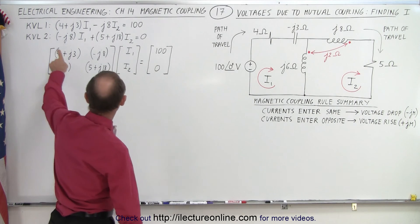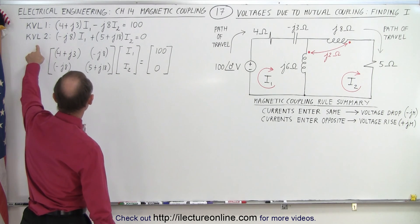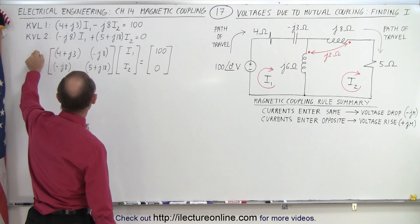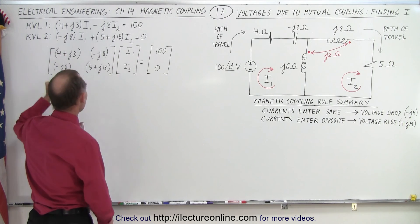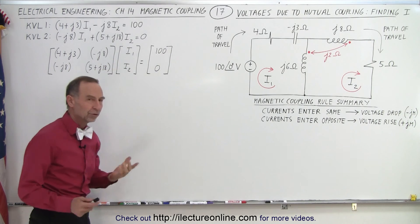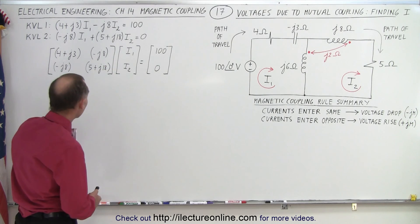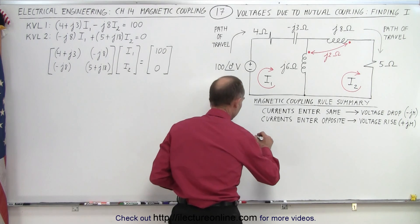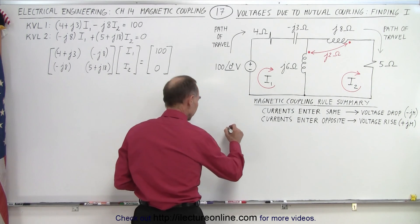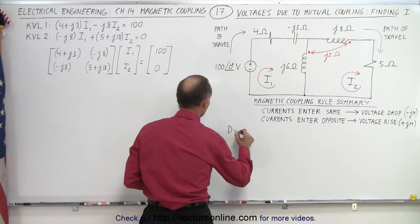Alright, we already have the two equations from going around each of the loops, KVL1 and KVL2, and then we turn that into a matrix format so we can solve it for I1 and I2. What we're going to do now is find the three determinants to find I1 and I2. So first of all, the determinant, let me give myself a little more room here.